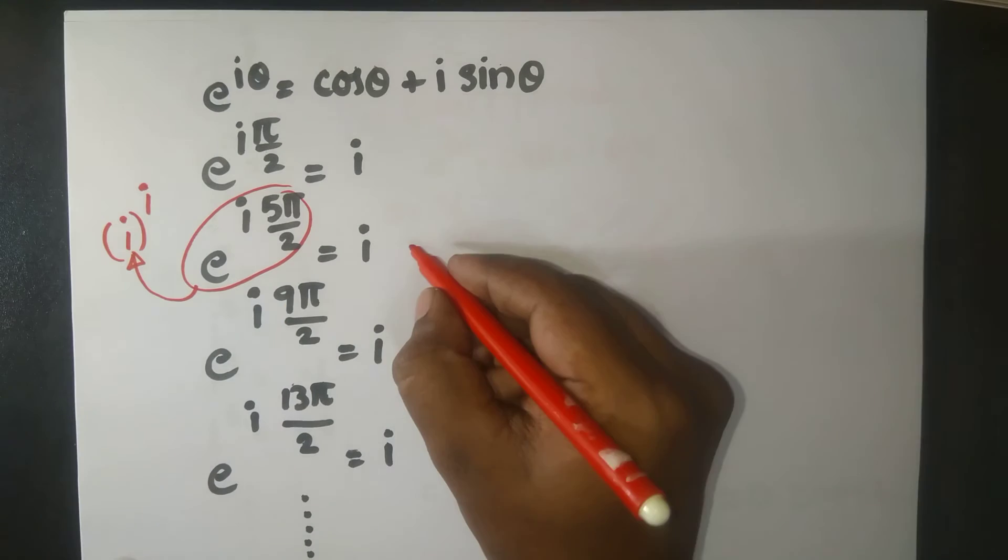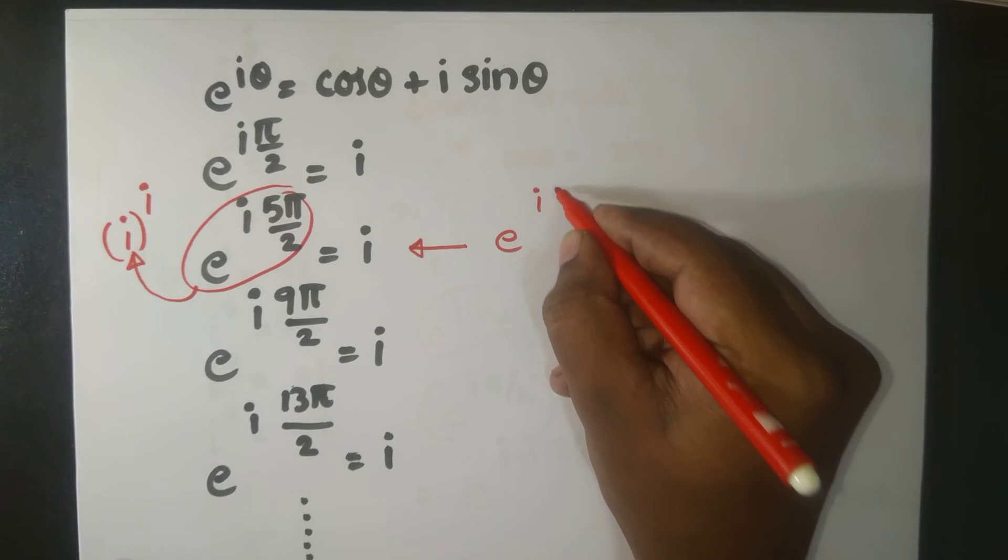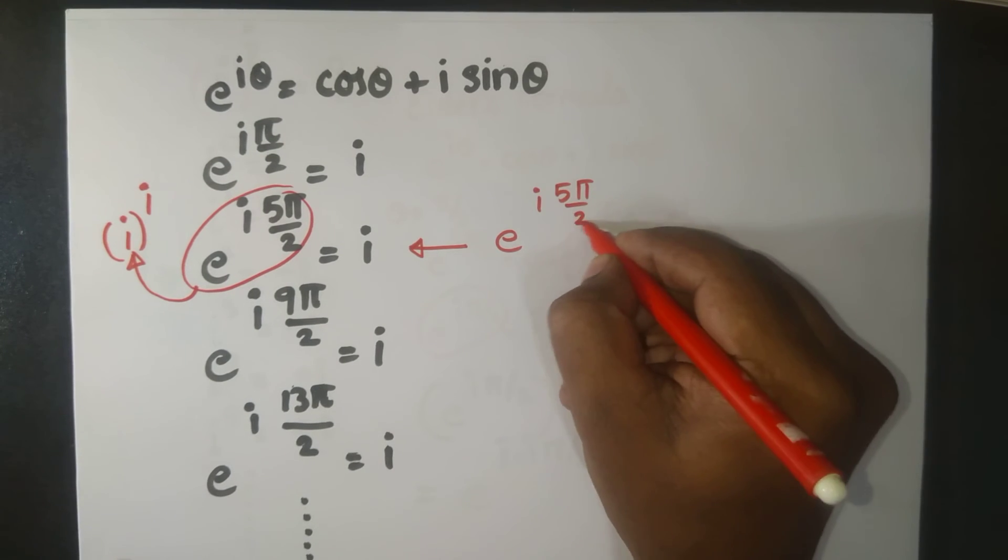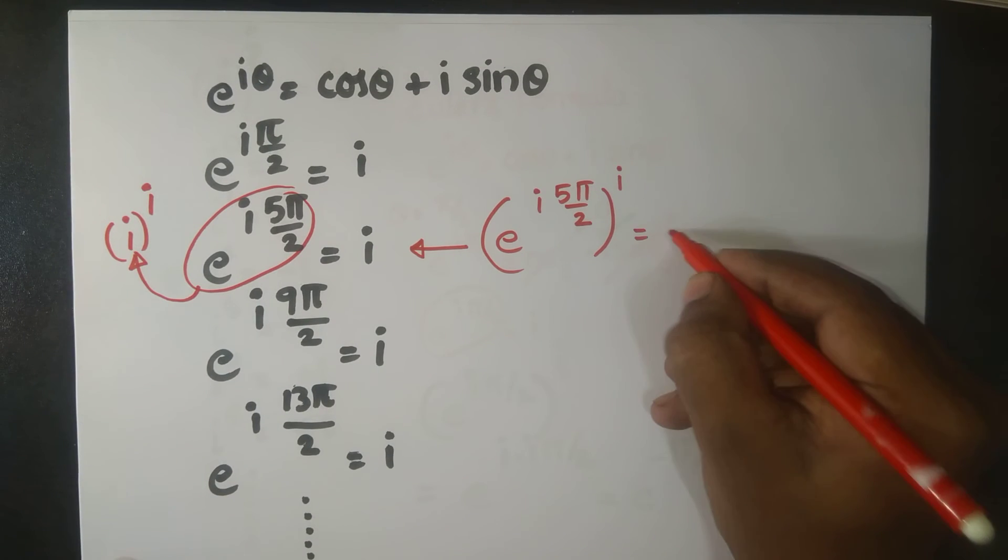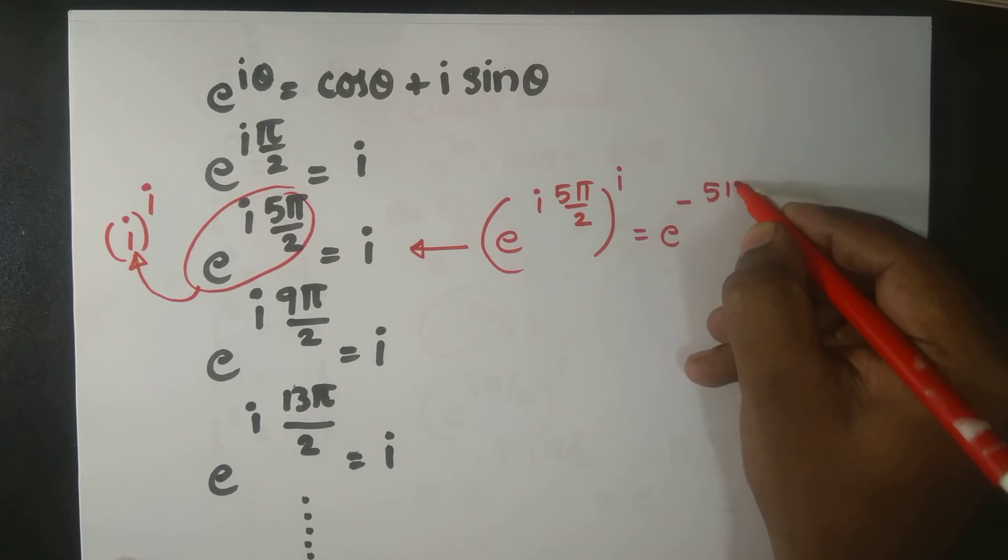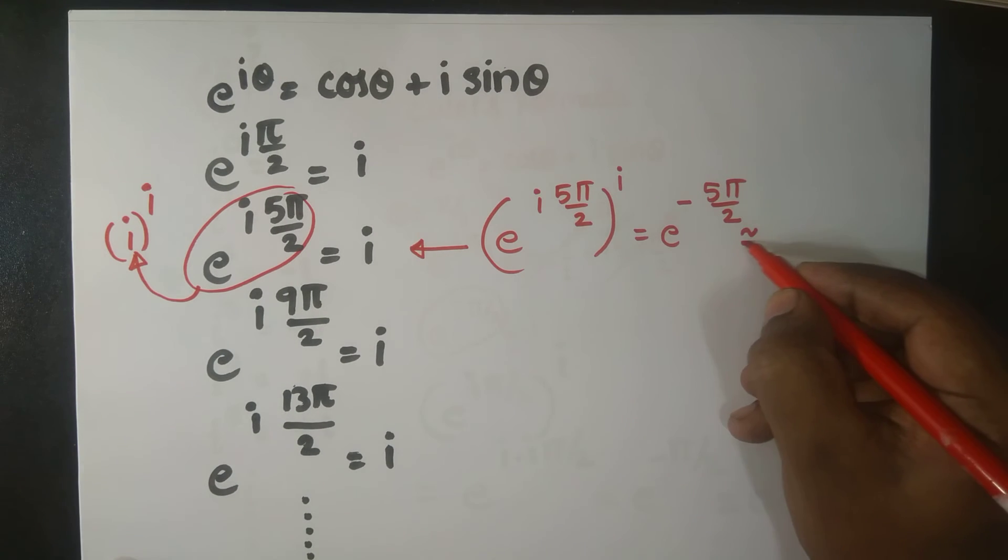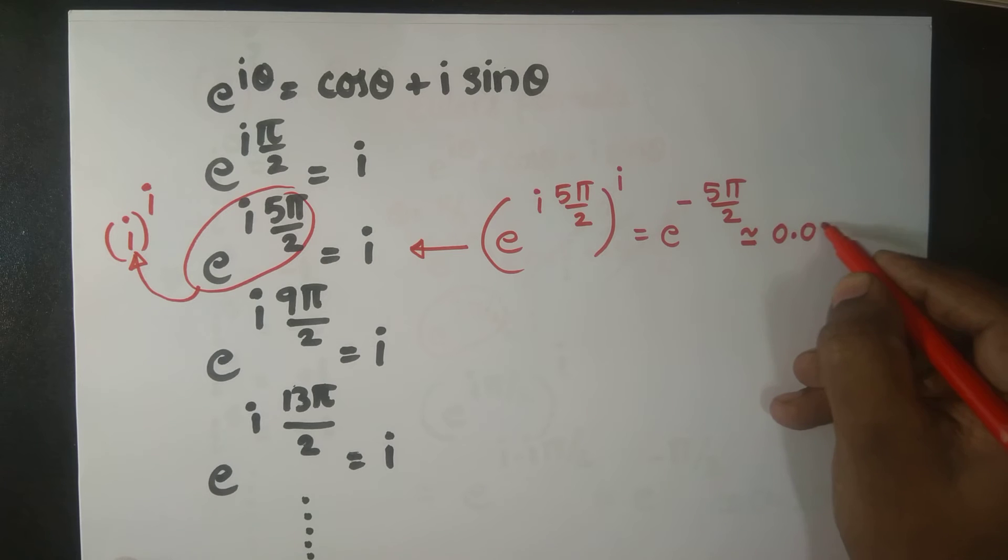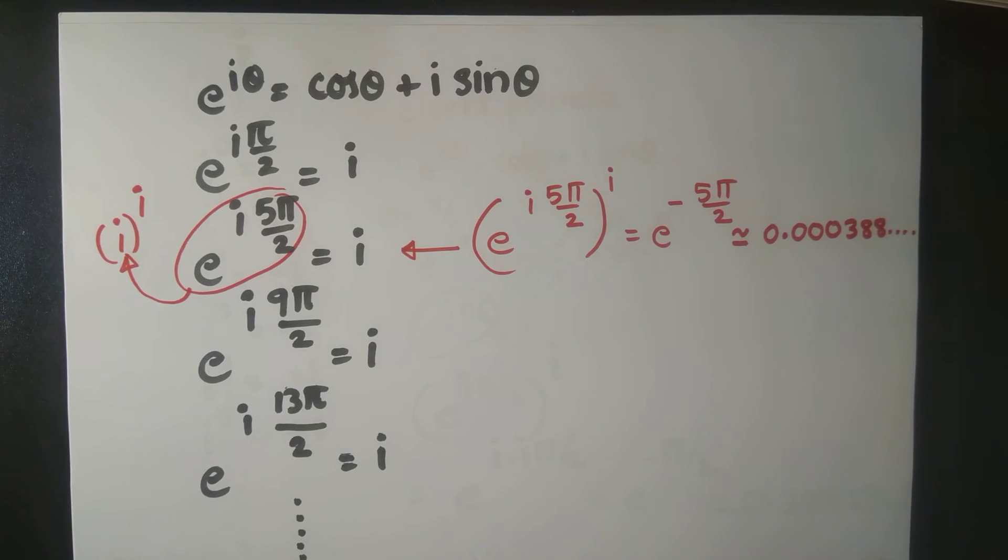This is what you have, right? So you plug in this one now. So e^(i·5π/2) raised to the power of i. This is e^(-5π/2). Now what is e^(-5π/2)? It's approximately equal to 0.000388 and so on.